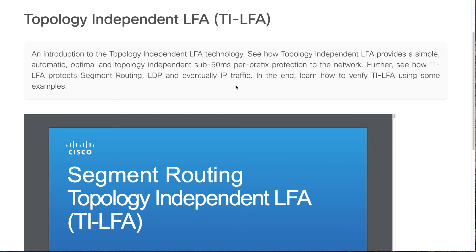That's why you see the title says Sub-50 Millisecond. This LFA is all about protection — you are trying to protect your traffic. The whole idea is we are trying to protect our link, and we can also protect our node. TI-LFA is primarily IGP automated, making it simple to understand and deploy. We do not need any special routing protocol or extra protocol. The main advantage is when we have a loop-free alternate path, we can achieve a backup path in less than 50 milliseconds.